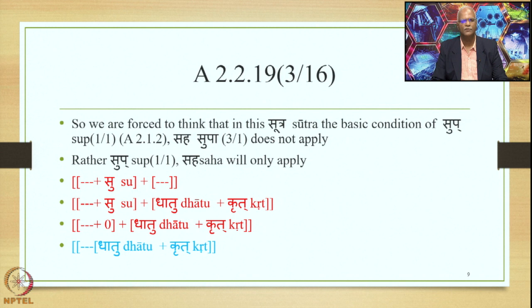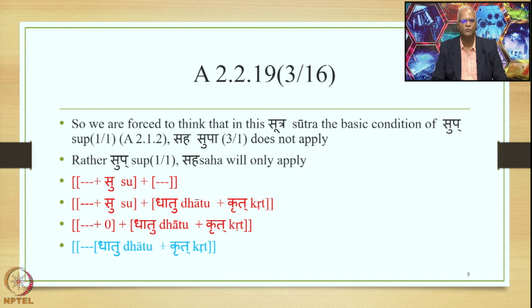We are forced to think that in this Sutra the basic condition of Sup and Sahasupa does not apply. Rather, Sup and Sahasupa will only apply. So the skeleton of the derivation is the following: in the first Subanta there will be Pratipadika plus Su, plus now the second element will not be a Subanta — the second element will consist of Dhatu plus Krit. After the Samasa Saudnaya takes place, the Pratipadika Saudnaya applies and Supodhatu Pratipadika Yoho applies, we will delete the Su available in the Purva Pada. Since the Uttarapada does not have any Sup, there is no question of it getting deleted, and therefore we get the output as the Purva Pada Pratipadika plus the Uttarapada Pratipadika derived from a verbal root by adding the suffix Krit to it.